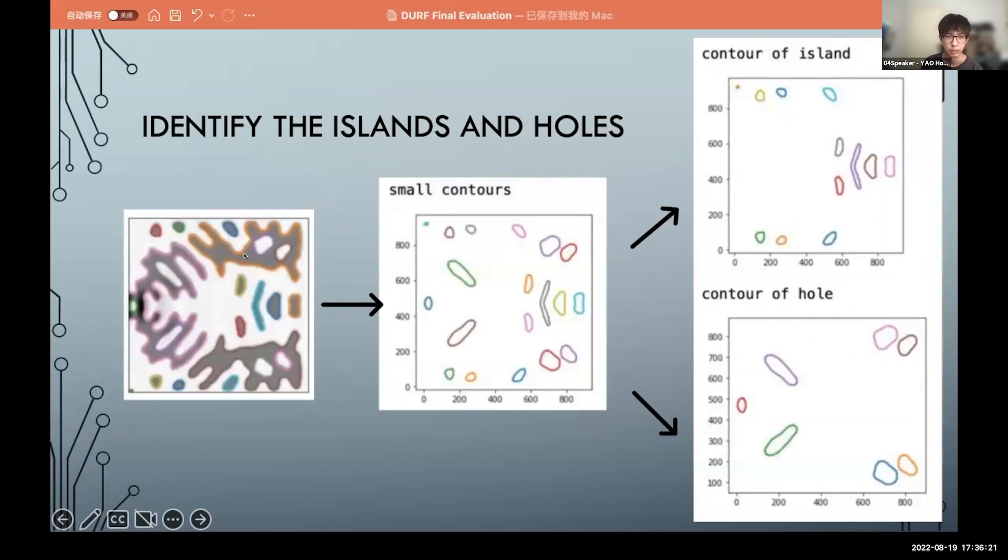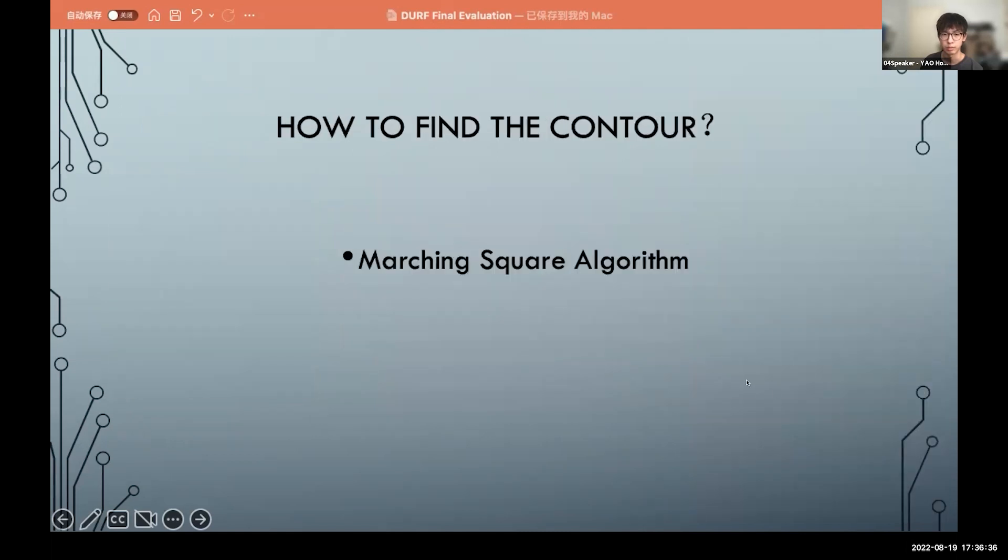And finally, this is the final result. Here is the waveguide, and we use the marching squares algorithm to get the contours and divide it into contours of islands and contours of holes. And we can eliminate them by this paper and these two parameters.